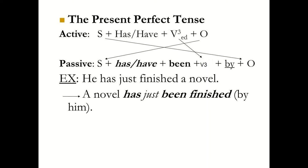If we want to change an active voice sentence to a passive voice sentence, we write first the subject — which is the object in the active voice — then has or have plus been plus the past participle form of the verb, plus by, plus the object which is the subject of the active voice sentence.